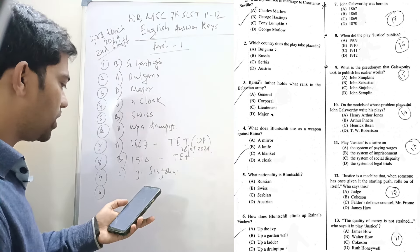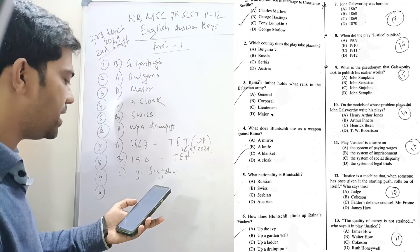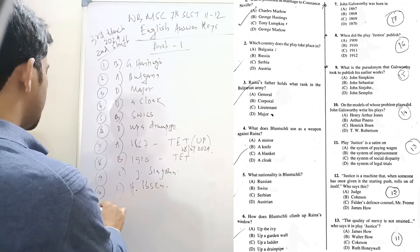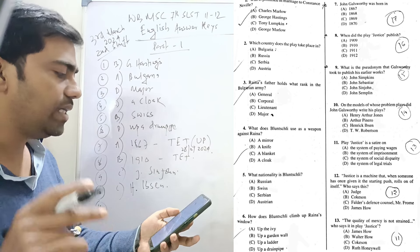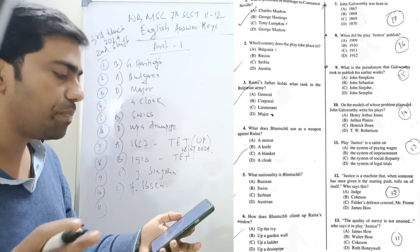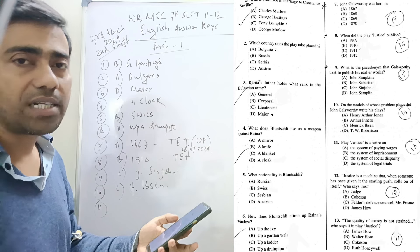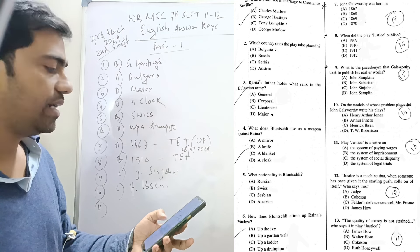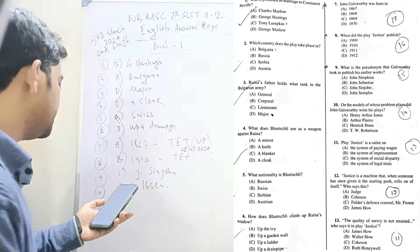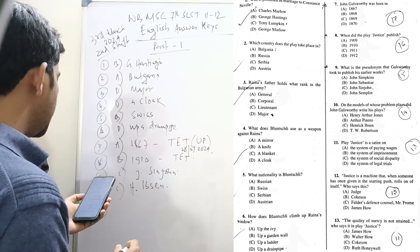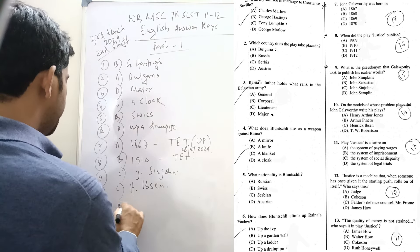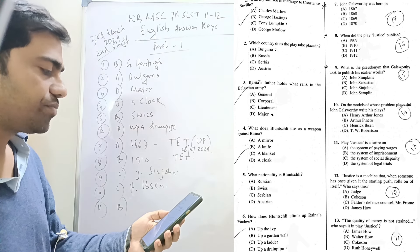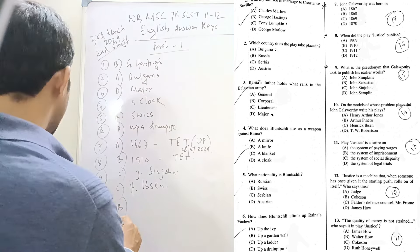Question ten: On the model of whose problem plays did John Galsworthy write his plays? Henrik Ibsen. Henrik Ibsen's model was followed by Henry Arthur Jones and Arthur Pinero and T.W. Robertson, but the Norwegian playwright Henrik Ibsen was the influencer of all three English writers. Eleven: The play Justice is set on the system of legal trials or imprisonment, but the system of imprisonment is mostly appropriate.